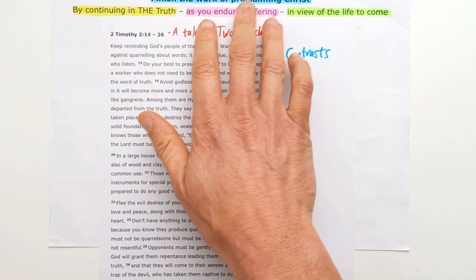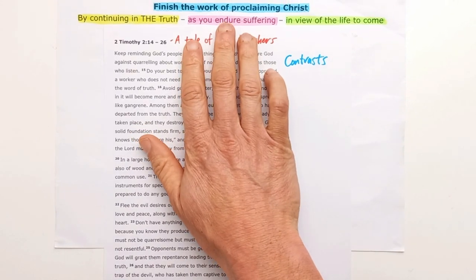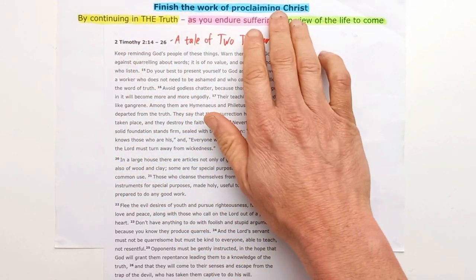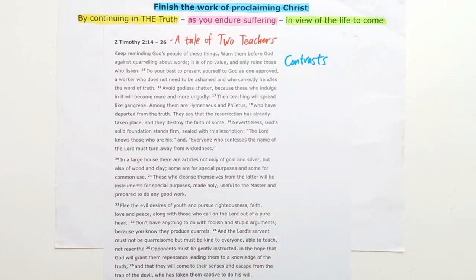We've seen already that the overarching theme in 2 Timothy is Paul calling Timothy to finish the work of proclaiming Christ by continuing in the truth as he endures suffering, in view of the life to come. In the previous passage — the beginning of chapter 2 — we saw all of these elements in focus as Paul called Timothy to stand firm in Jesus, endure suffering, proclaim truth so that others would be saved and stand firm until the great day when they would be with Jesus.